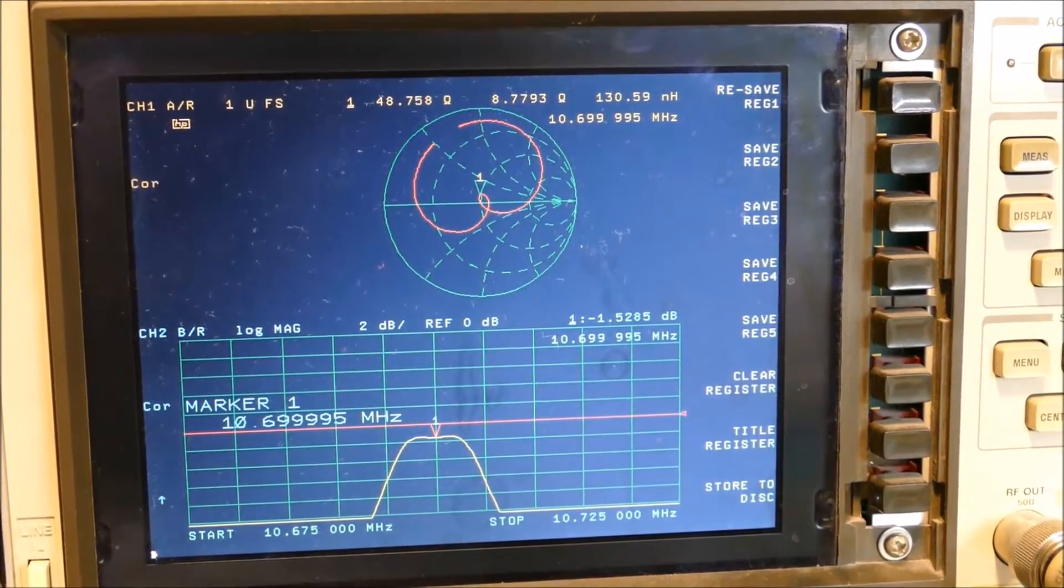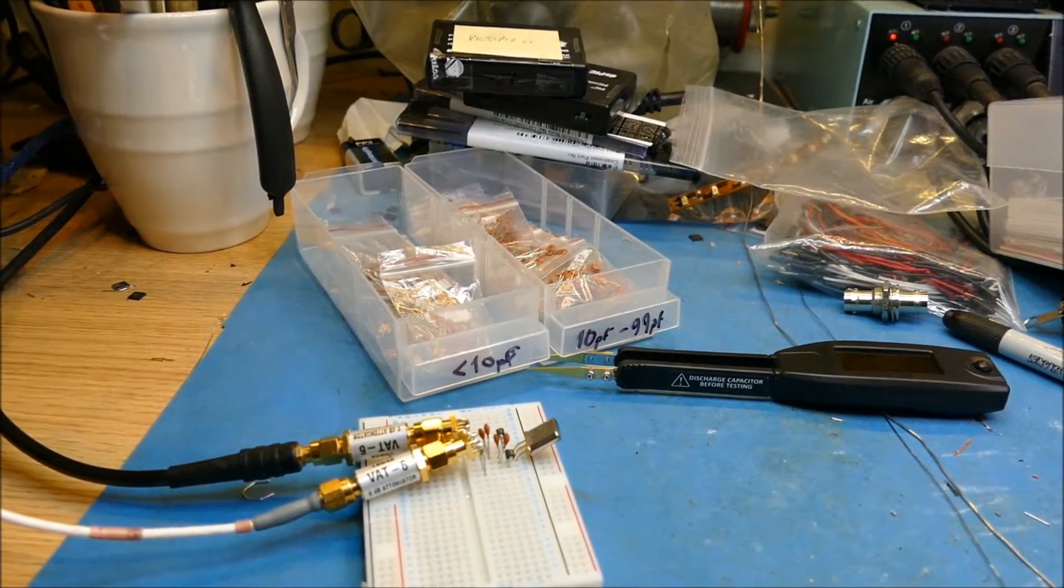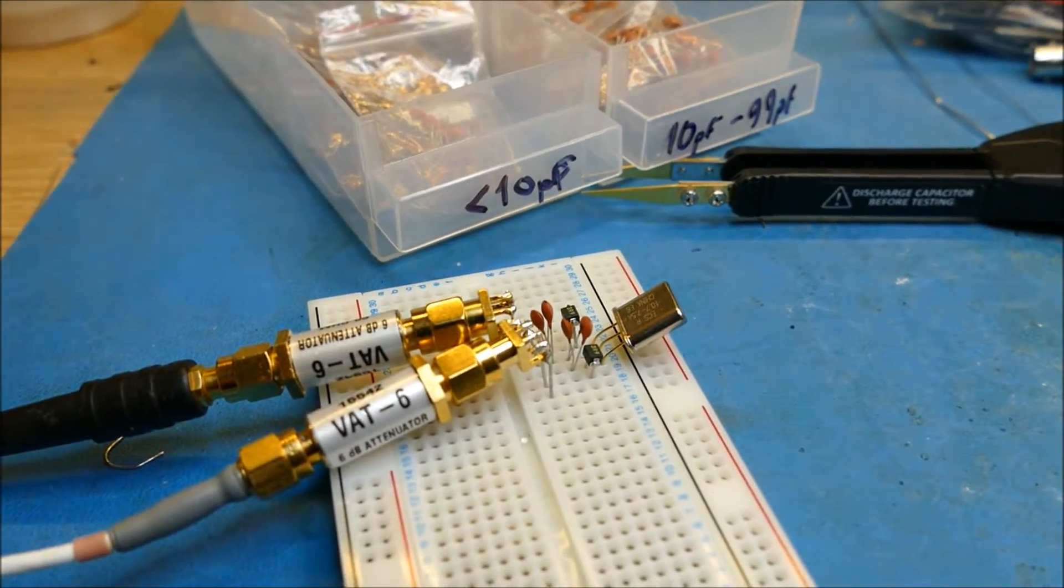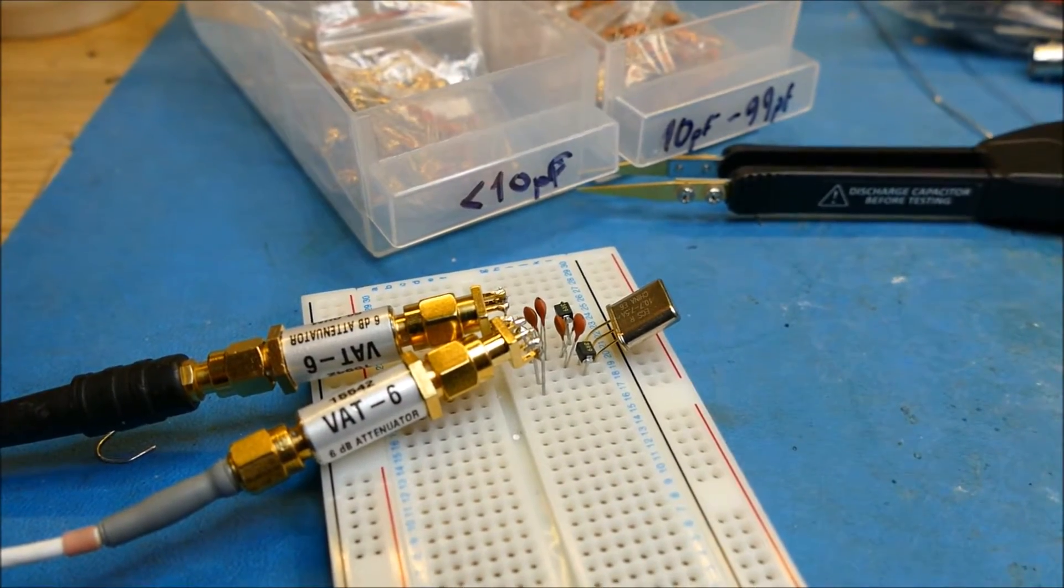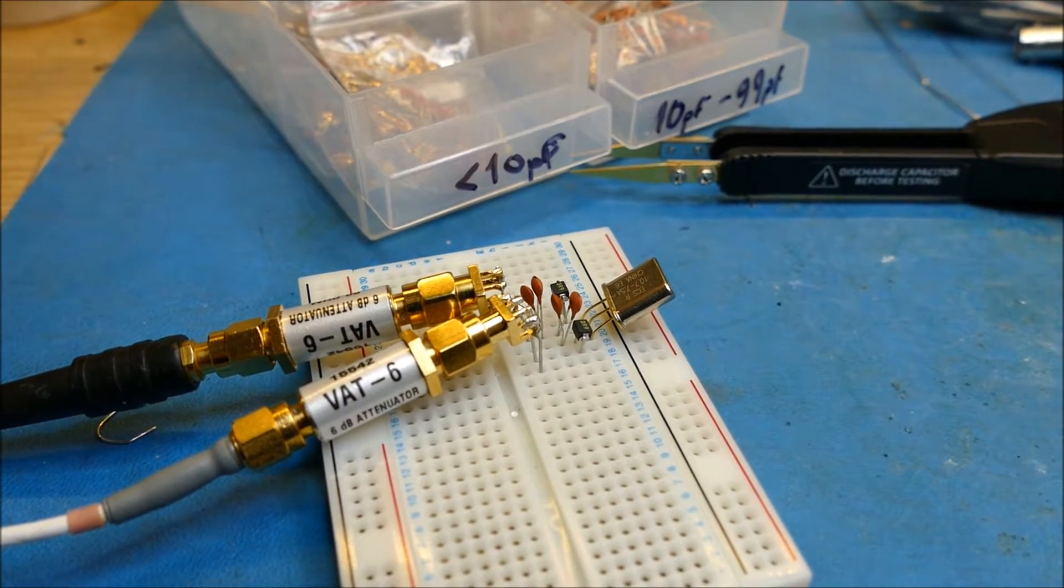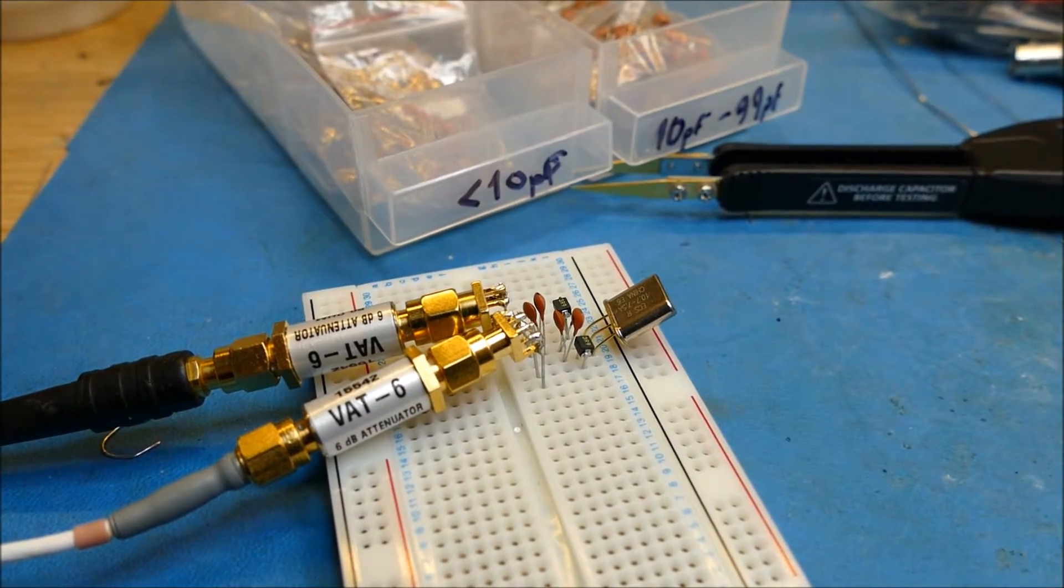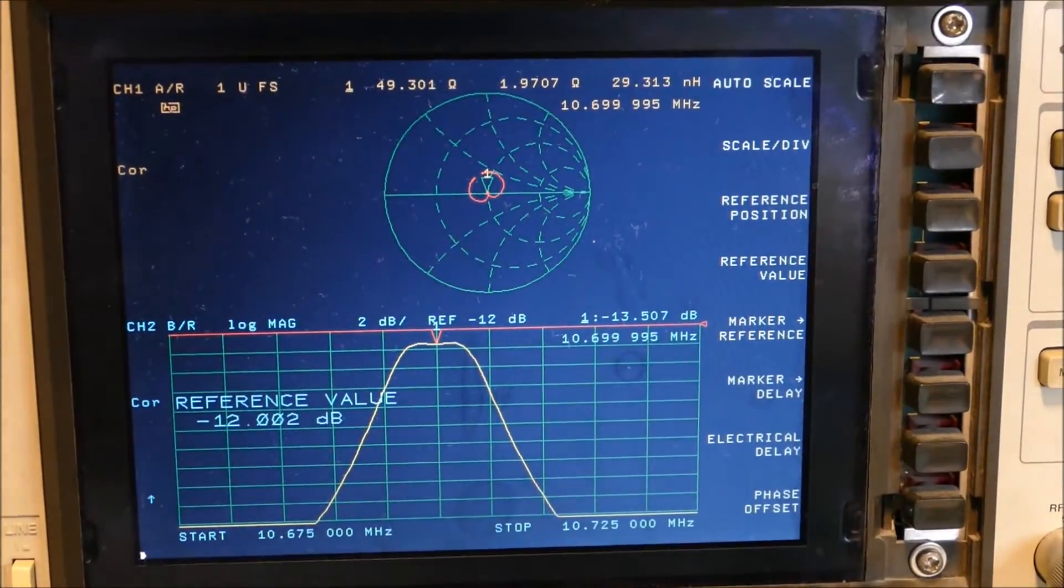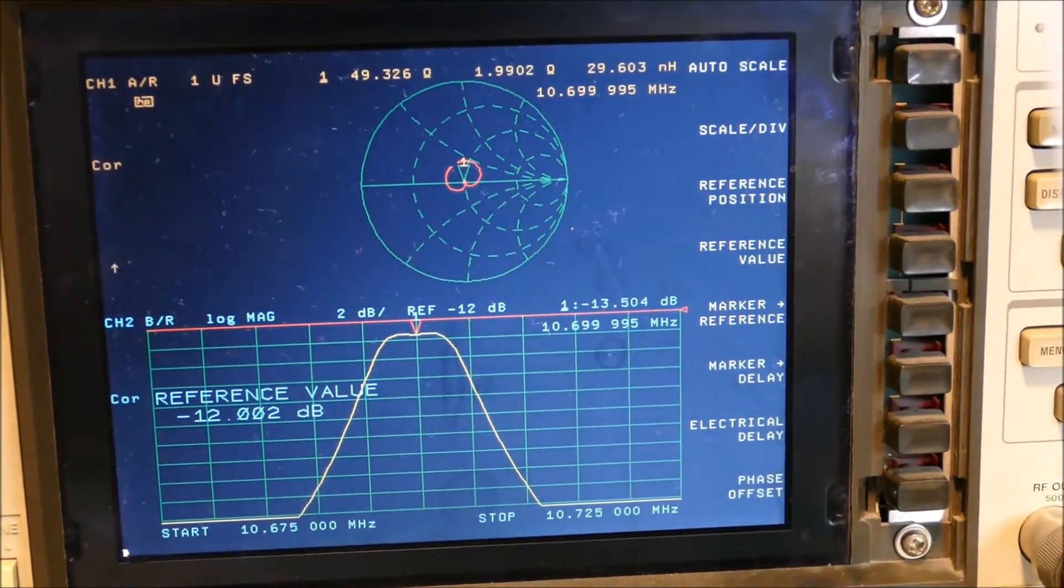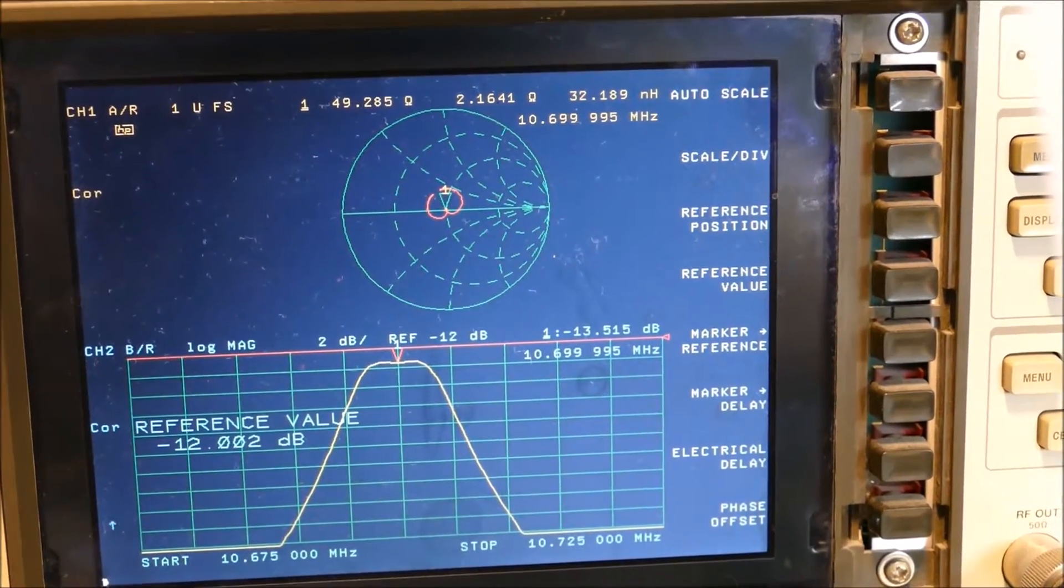Okay, so here we are again. You'll see I've got a couple of 6 dB attenuators on the filter now. I haven't recorrected the VNA - I'm just leaving the total of 12 dB attenuation in there - but I have adjusted the VNA slightly on its reference point so that I've taken the 12 dB out there, and you can see the effect that it has.